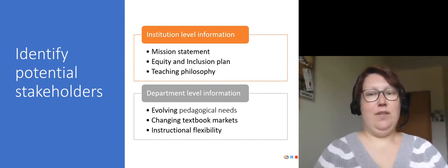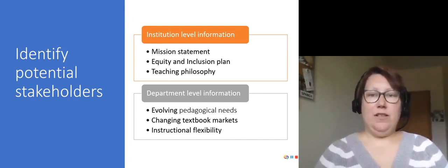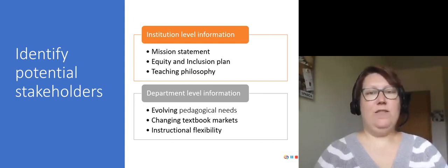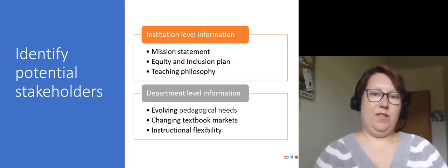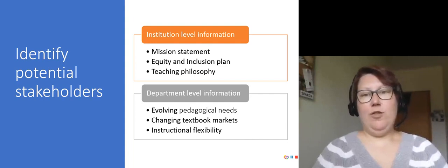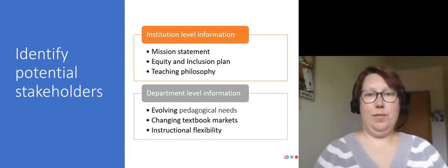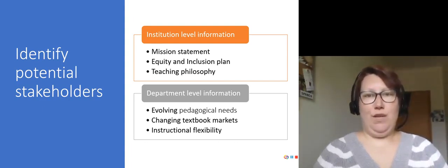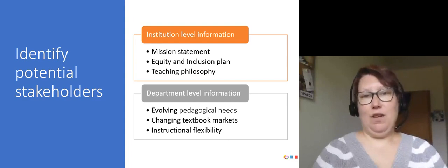There are a lot of other areas to look at, but these are really great ones to start with. This can include your college's mission statement, which drives most of what you do at the college and can be a good way to connect OER to the mission of your institution. Is there an equity and inclusion plan? OER often fits really well into these plans because it promotes equity and inclusion through several means. Is there a teaching philosophy that it fits in with? For example, a focus on anti-racism may be a good one.